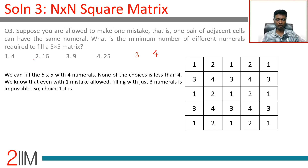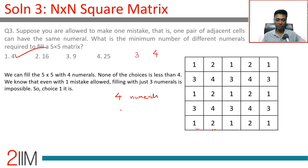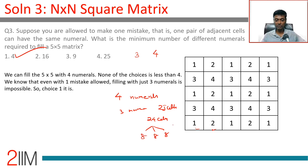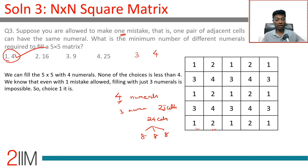The answer choices don't include anything below four — the options are four or more. With three numerals and 25 cells, even allowing one adjacent pair to match, we'd need roughly eight cells each for three numerals, and it's going to get crowded with adjacency violations. So this leeway of one mistake doesn't really help — the answer is still four.